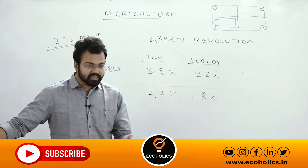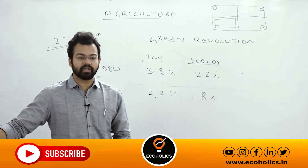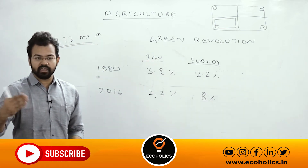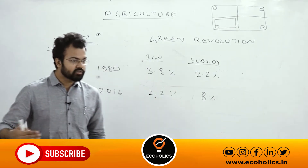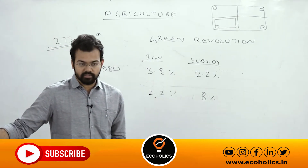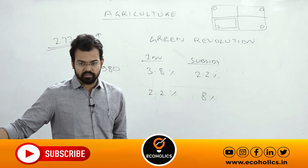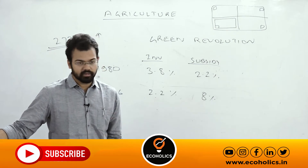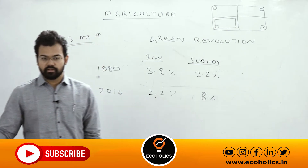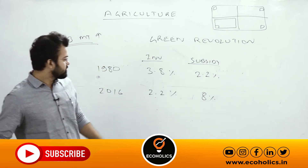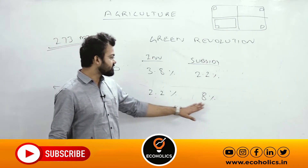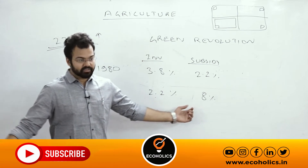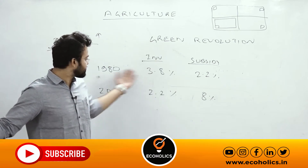We are rationalizing government expenditure — that is the meaning of fiscal prudence. The growth rate in subsidies has been around 8% in the same period, while investment has been declining.